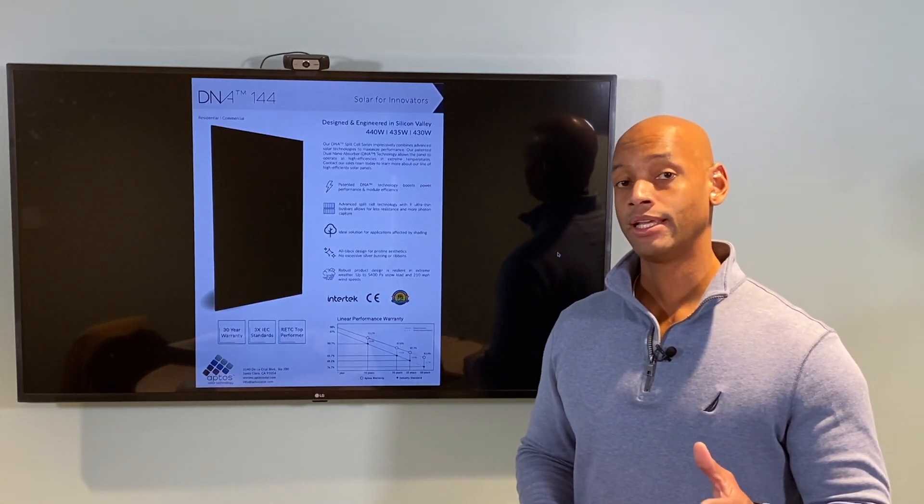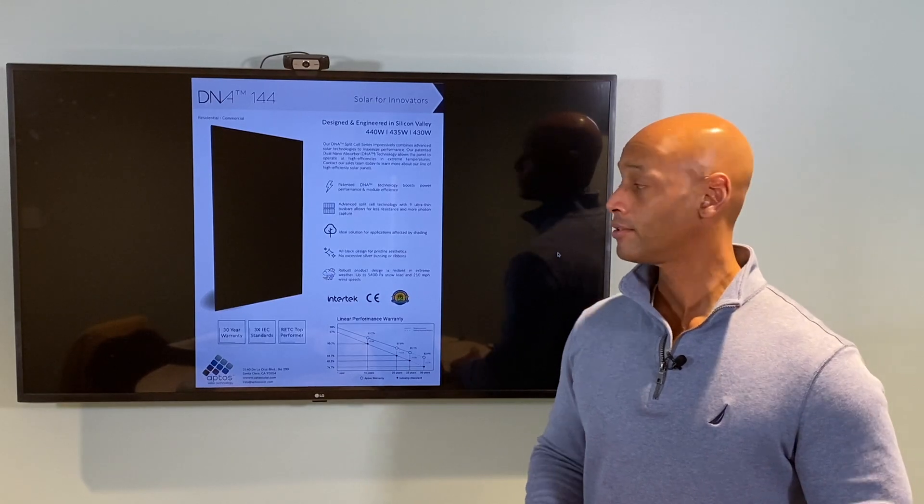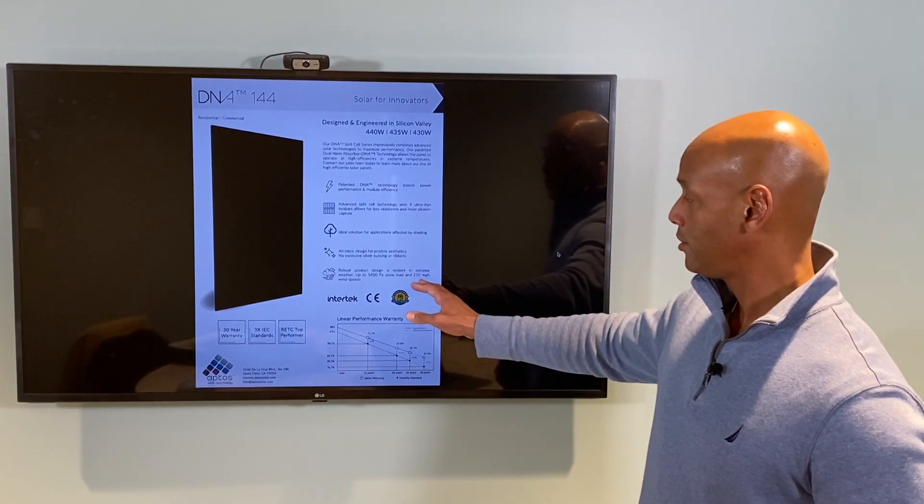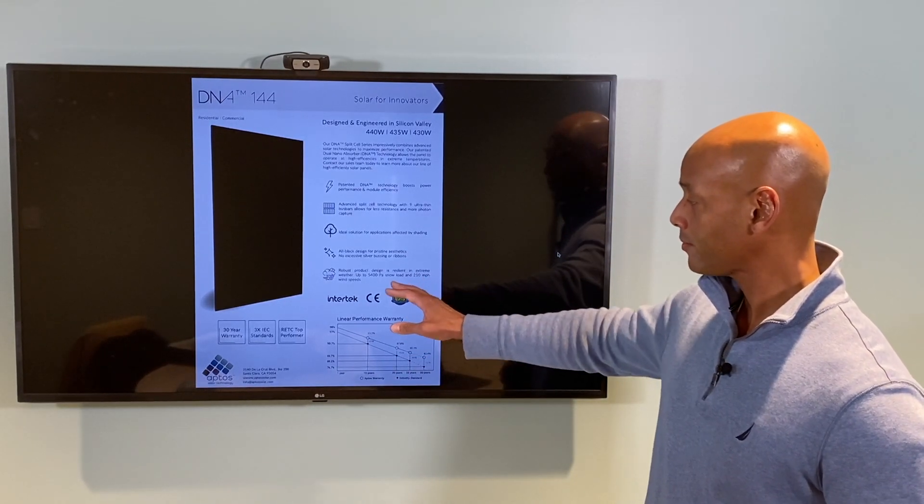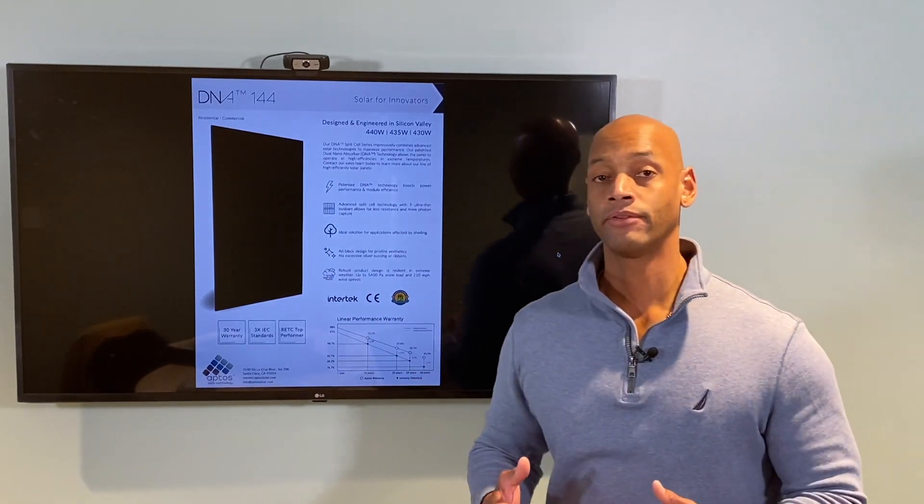The Aptos panel is designed for harsh weather conditions, supporting wind speeds up to 210 miles an hour, 5400 PA snow load rating, and it's very resilient to hail.